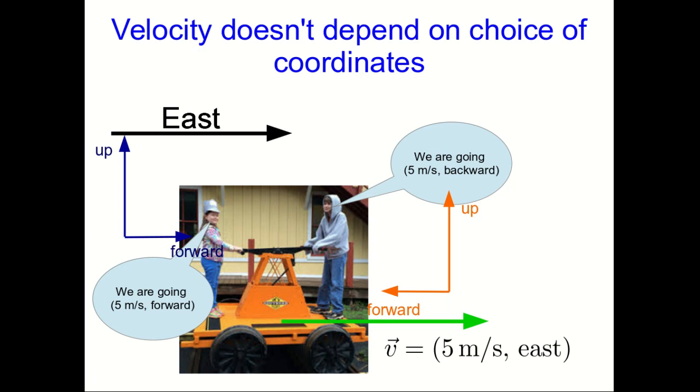So the velocity vector, because it's determined from a displacement vector, which is coordinate-independent, and a time interval, which is independent of when we define t to be 0, doesn't depend on our coordinates. However, the components of the velocity can depend on the coordinates. So there's a difference between the components, which is to do with how we describe the velocity, versus the velocity itself.